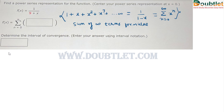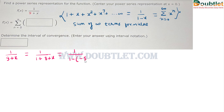From above, the function is written in the form of 1 divided by 9 plus x. We can write it in the form of 1 over 1 plus 8 plus x, and if we try to write it in the infinite series format, this becomes 1 over 1 minus (minus 8 minus x). So we need to replace (minus 8 minus x) with x in the summation series, giving us the sum from n equals 0 to infinity.